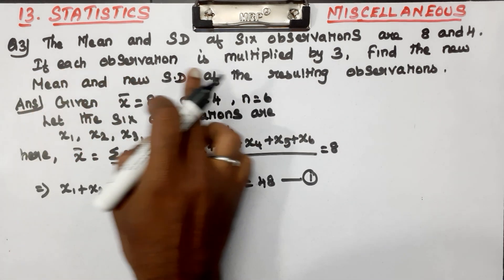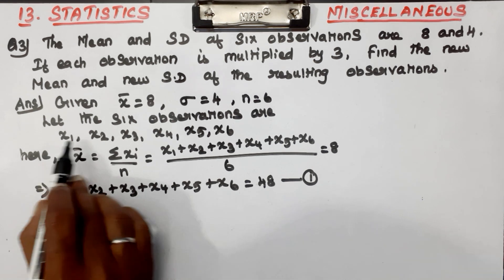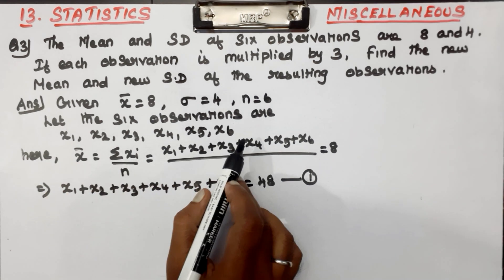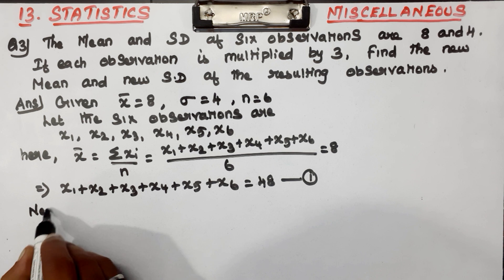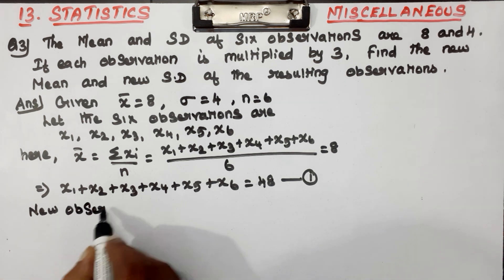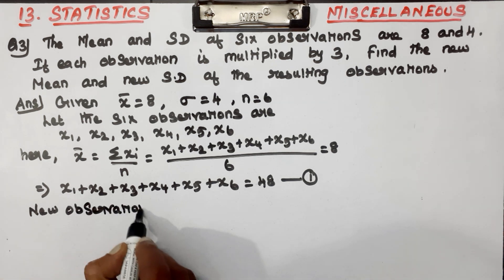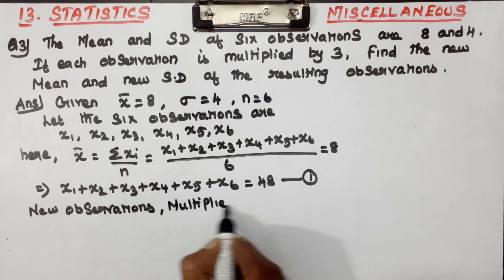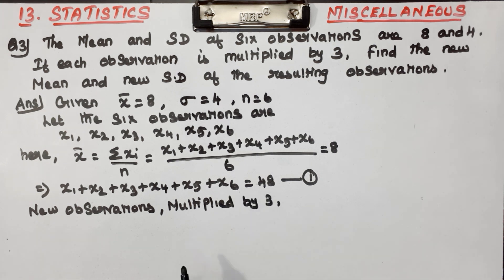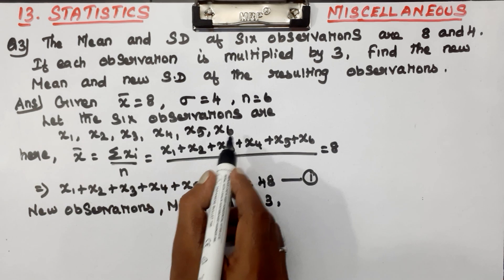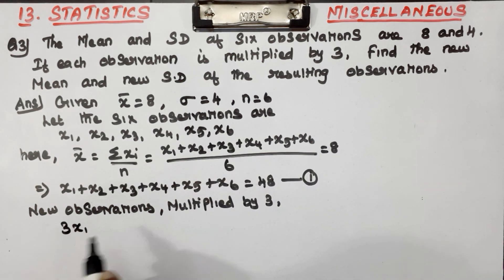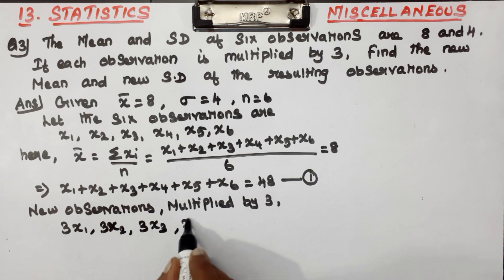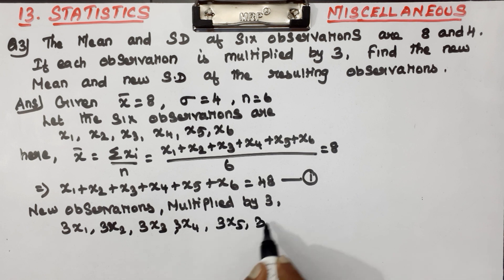Second step: if each observation is multiplied by 3, the new observations become 3x1, 3x2, 3x3, 3x4, 3x5, and 3x6.